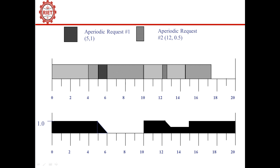The server capacity is not used until time instant 5, at which point the previous period is exhausted and the server is replenished to capacity 1 again since its period is 5. At time instant 5 we also receive an aperiodic job request. So we schedule the aperiodic request from time 5 to 6, preempting task B at time instant 5.